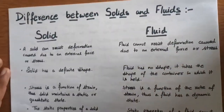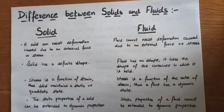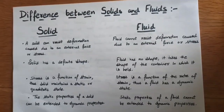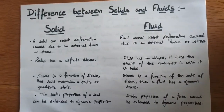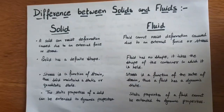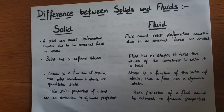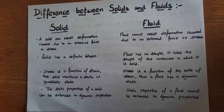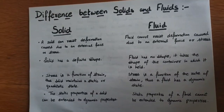Now let's see the difference between solids and fluids. A solid can resist deformation caused by an external force or stress — when you apply an external force to a solid, it resists deformation and maintains its initial shape. While for a fluid, it cannot resist deformation caused by an external force or stress, so a fluid will deform when an external force or stress is applied. Also, a solid has a definite shape, while a fluid has no definite shape.